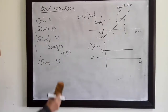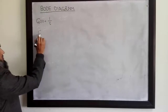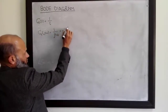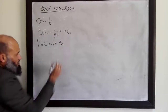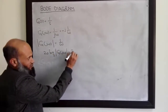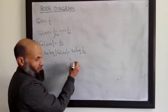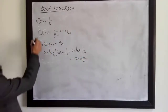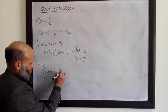Next we talk about the Bode diagram for the transfer function G(s) = 1/s. Its magnitude G(jω) is 1/ω, which is the same as −j times 1/ω. So the magnitude of G(jω) is 1/ω. In dB's, 20 log|G(jω)| = 20 log(1/ω) = −20 log(ω). The phase angle of this complex number G(jω) is equal to −90 degrees for all frequencies.